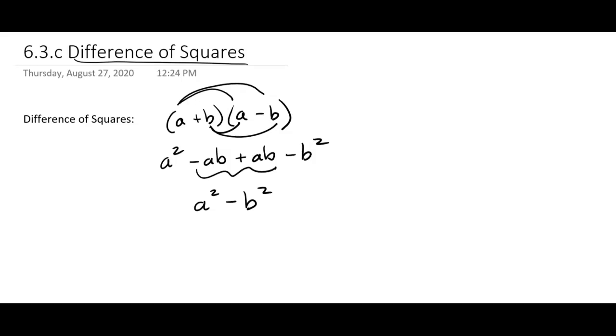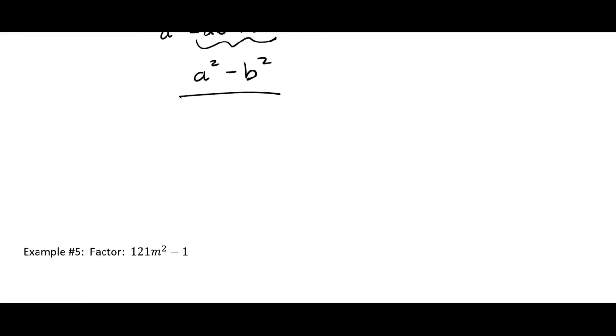One of the reasons I like difference of squares is they're pretty easy to spot, because you only have two terms. So we're looking for something in this form, a squared minus b squared.